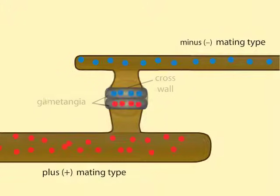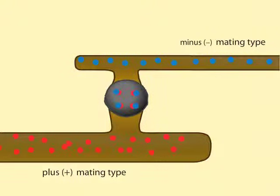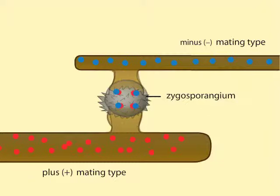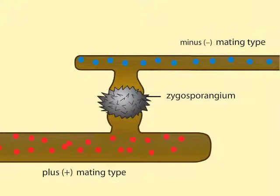These gametangia fuse and the nuclei inside pair up. The pairs of nuclei eventually fuse as well and the entire multi-nucleate structure becomes a zygosporangium. The zygosporangium develops a thick, tough wall and can remain dormant for months.